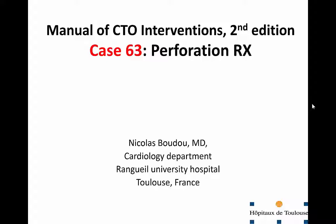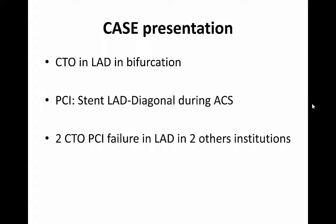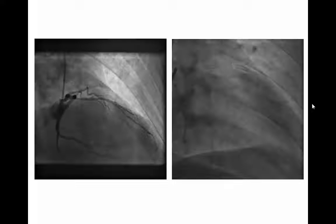This patient had a CTO in LAD in bifurcation and he had previous stent implantation in proximal LAD and diagonal during acute coronary syndrome. Two CTO-PCI attempts failed in LAD in two other institutions during the previous few years, and the patient is symptomatic and referred to me to try again to reopen this LAD.